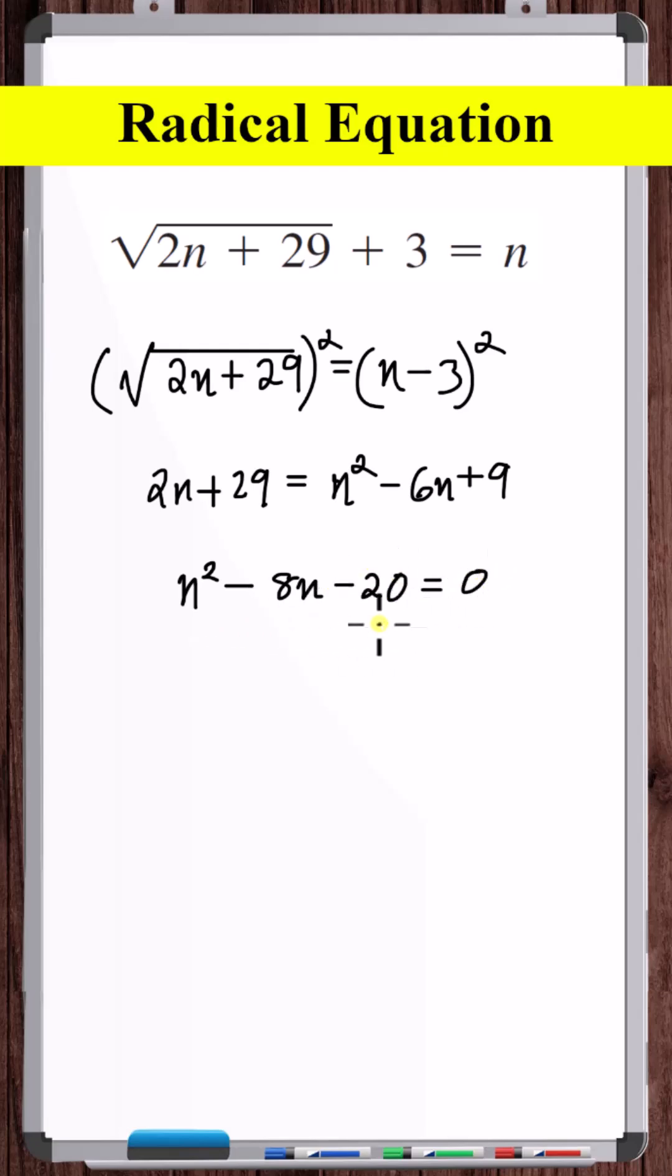Now, let's solve this quadratic equation. Let's factor this expression. Minus 20 you can break down as minus 10 times 2. Minus 10 plus 2 is minus 8, minus 10 times 2 is minus 20. So n is equal to 10 and n is equal to minus 2.